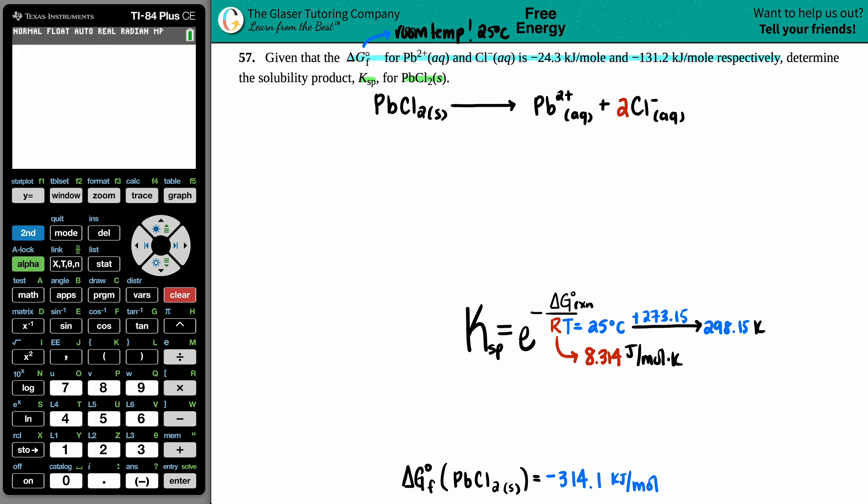Let's link up the delta G values they gave me. They said Pb²⁺ and Cl⁻ respectively, so Pb²⁺ goes with -24.3 and Cl⁻ is -131.2. But they didn't give me a delta G formation for PbCl₂, so I looked it up in the back of the textbook. Since we're at room temp, we're allowed to use the appendix values. PbCl₂ has -314.1 kilojoules per mole.